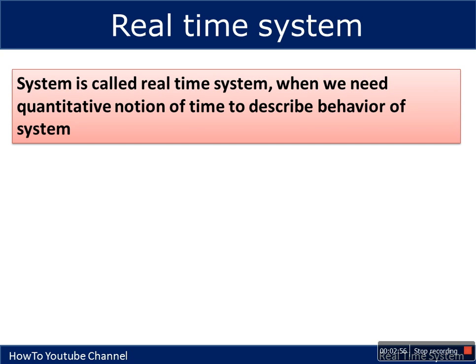Now let's see what a real-time system is. Normally, to check if a system is working properly, we compare its output with the actual expected output — if both match, the system is working correctly. But in a real-time system, time is used to describe the behavior of the system, and the quantitative notion of time is used.